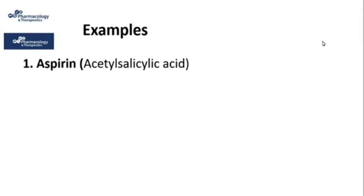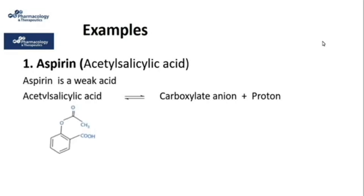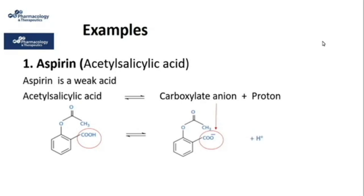Aspirin, chemically known as acetylsalicylic acid, is a weak acid. Its equilibrium dissociation reaction shows acetylsalicylic acid with a carboxylic function dissociating into a carboxylate anion — it is a proton donor. pKa is determined by the nature of the functional groups involved in dissociation. Here it is the carboxylic function, which has a pKa equal to 3; therefore the pKa of aspirin is 3, which matches the value recorded in the literature.